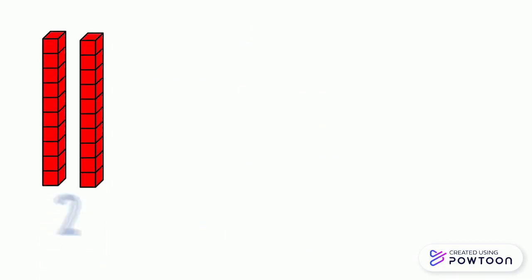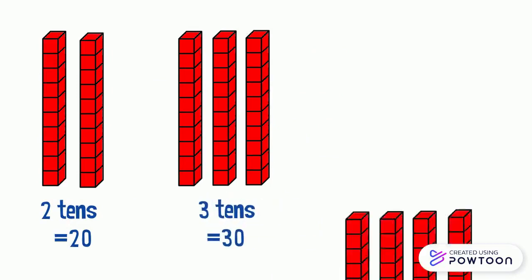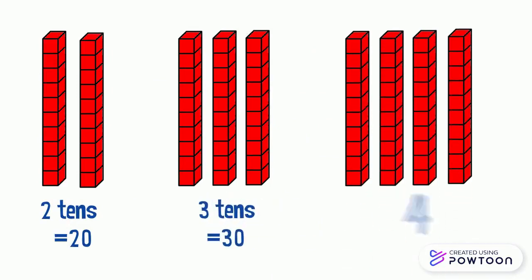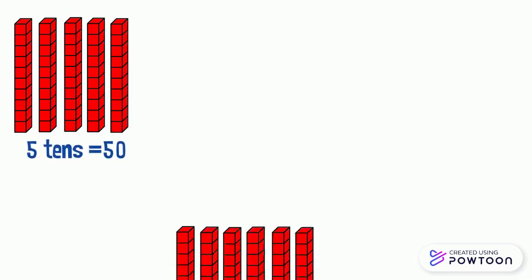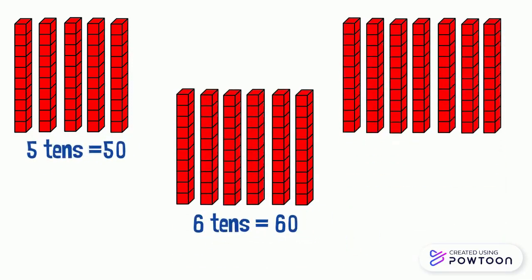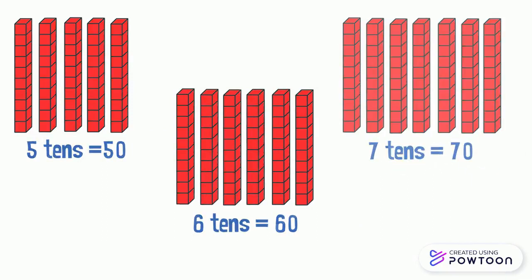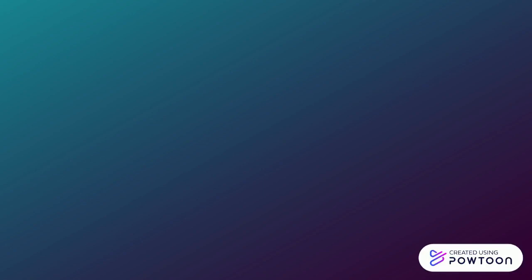Two tens equals twenty. Three tens equals thirty. Four tens equals forty. Five tens equals fifty. Six tens equals sixty. Seven tens equals seventy. Now we are going to count the numbers from 80 to 89.